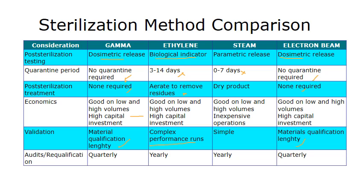For gamma and electron beam, you have to ensure that the product itself maintains its integrity after treatment, so there's a lengthy qualification period. This table is a very good reference to compare and contrast the three different methods.